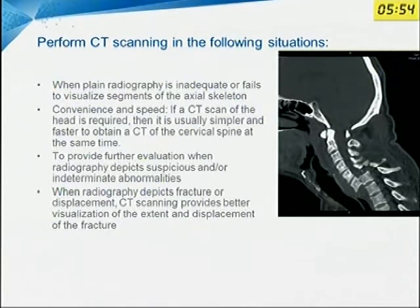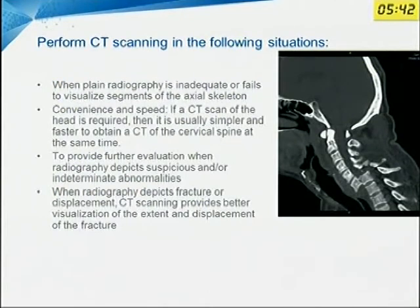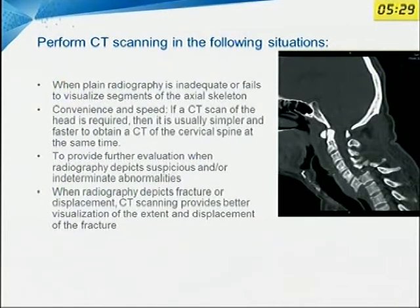Another indication for CT scan is convenience and speed. If a CT of the head is needed, you can always ask for a CT of the cervical spine along with that. Spiral CTs are very fast; they can image the cervical spine or even the whole vertebral column in a few minutes. CT is also used for further evaluation of suspicious or intermediate abnormalities seen on X-ray, and to better assess displacement.